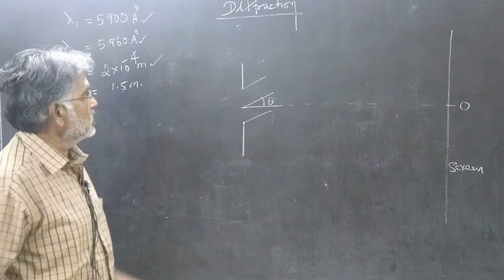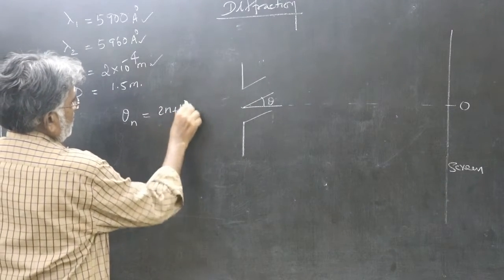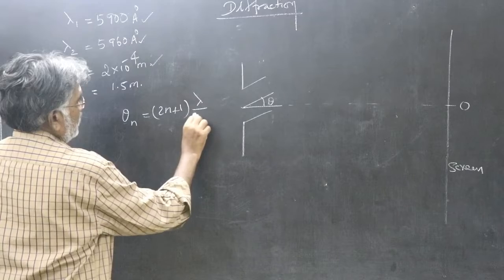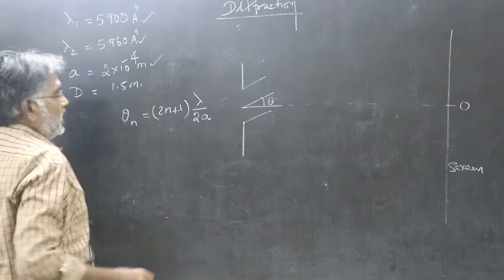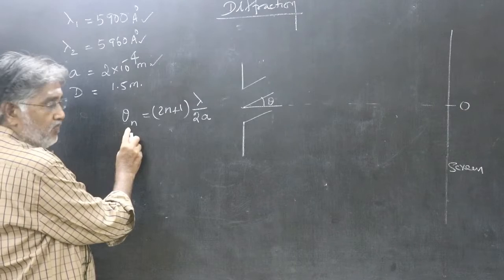Now, the condition for secondary maxima is theta equals 2n plus 1 into lambda by 2a. If you put n as 1, the angle will be for the first secondary maxima.